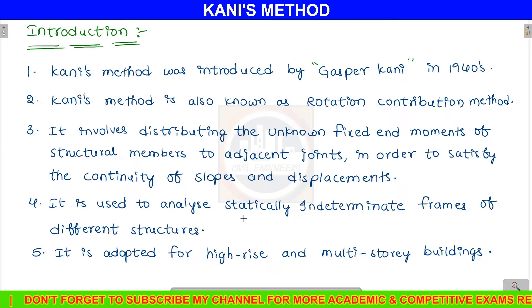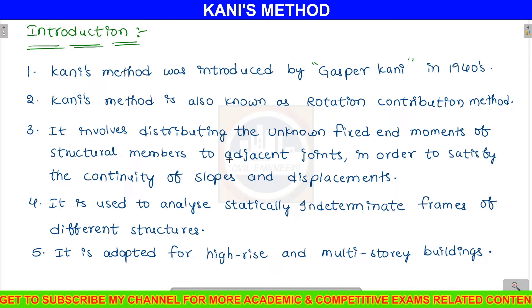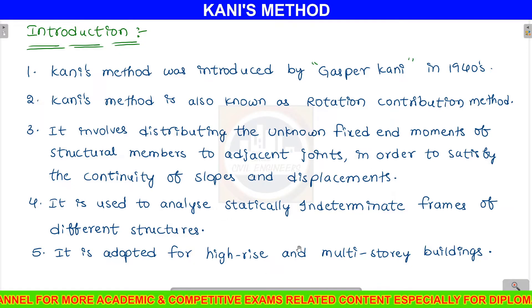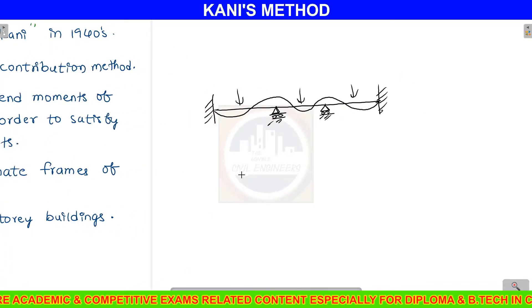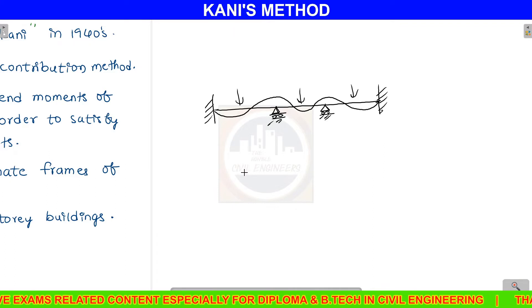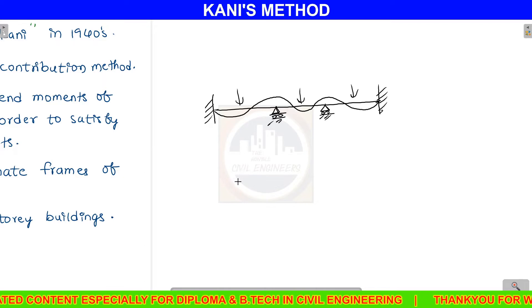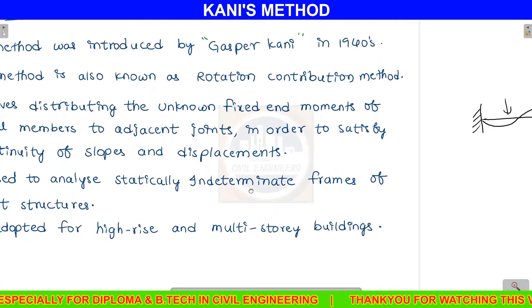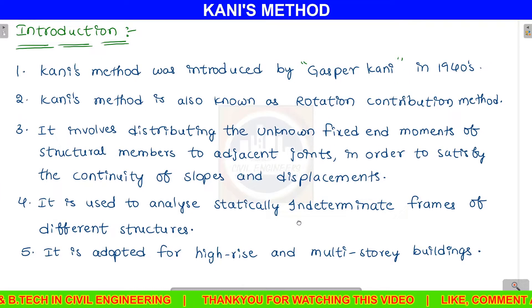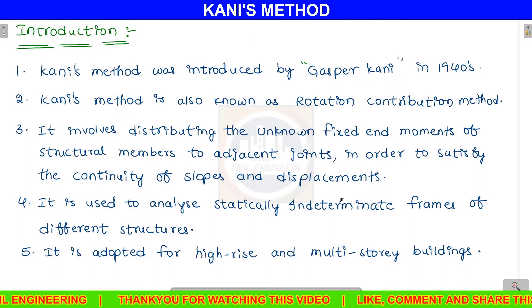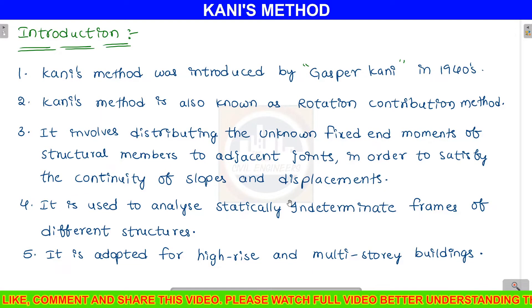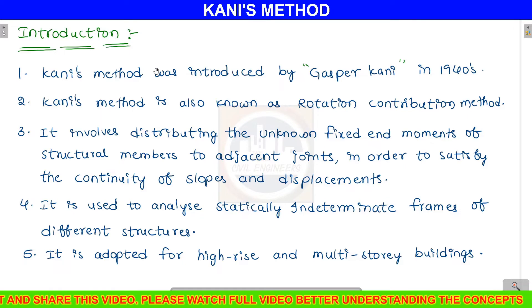Kani's method is used to analyze statically indeterminate frames. Statically indeterminate frames are those which cannot be analyzed using just the three equilibrium equations — summation of horizontal forces, vertical forces, and moments equal to zero. When a structure can be analyzed using those three equations alone, it is a determinate frame. Otherwise, it is a statically indeterminate frame, and Kani's method is the best method to analyze such frames.